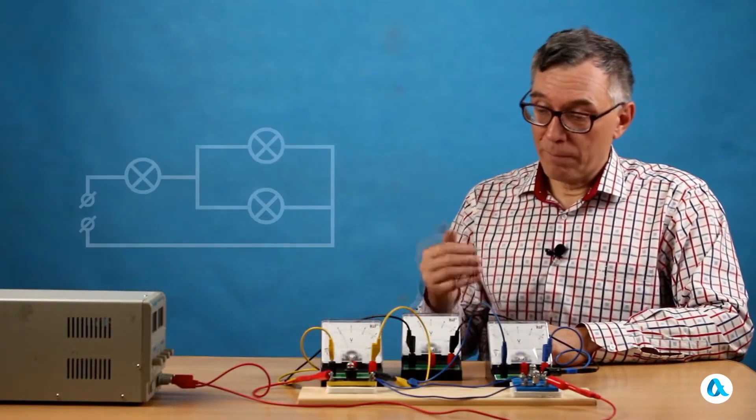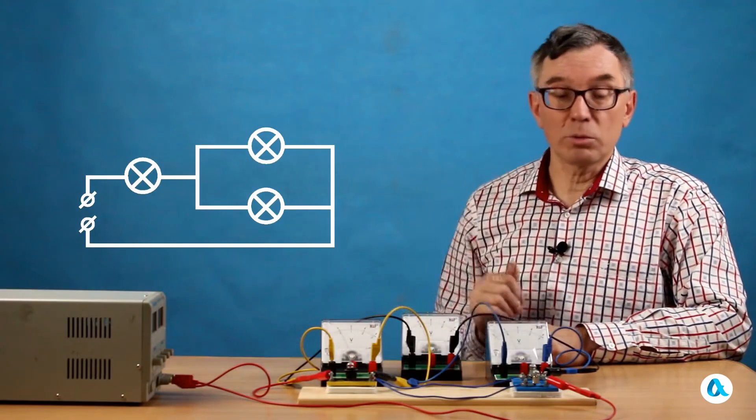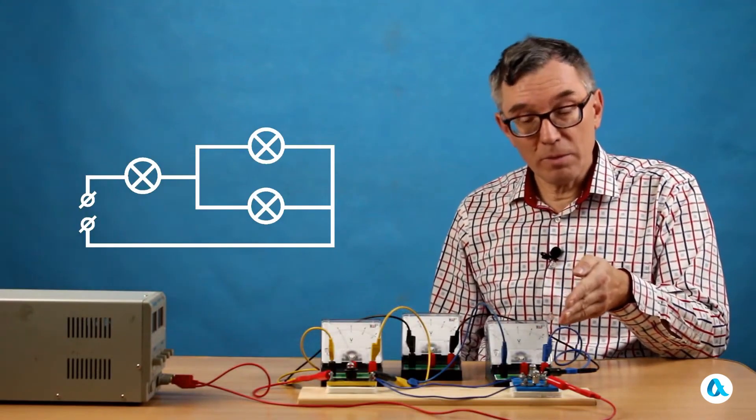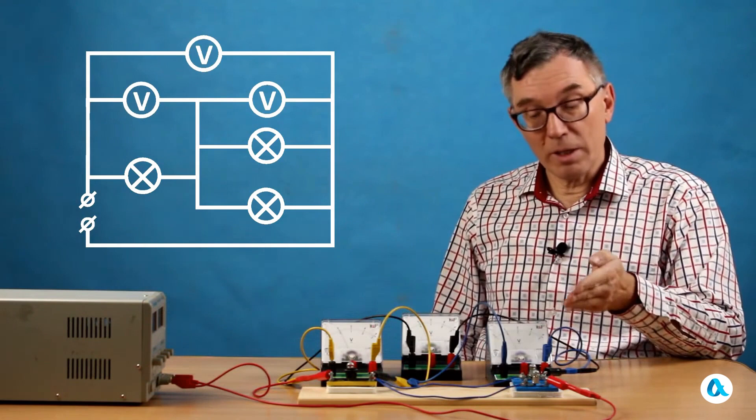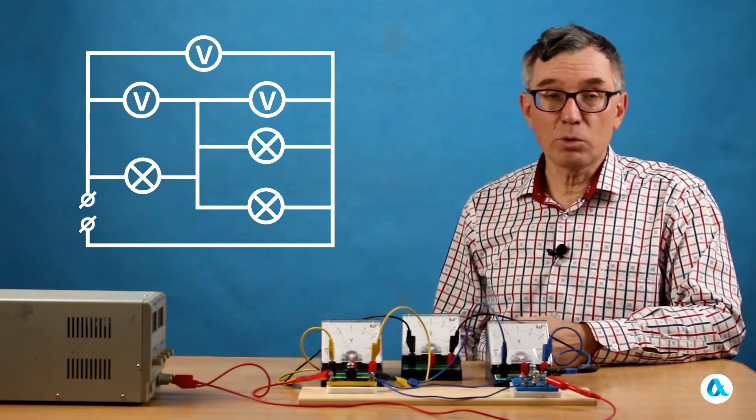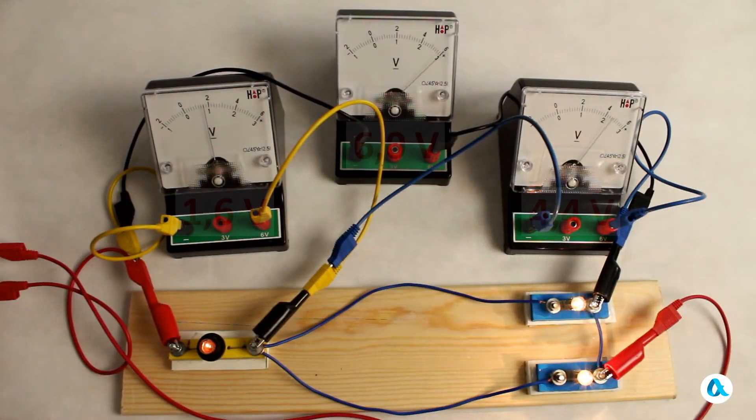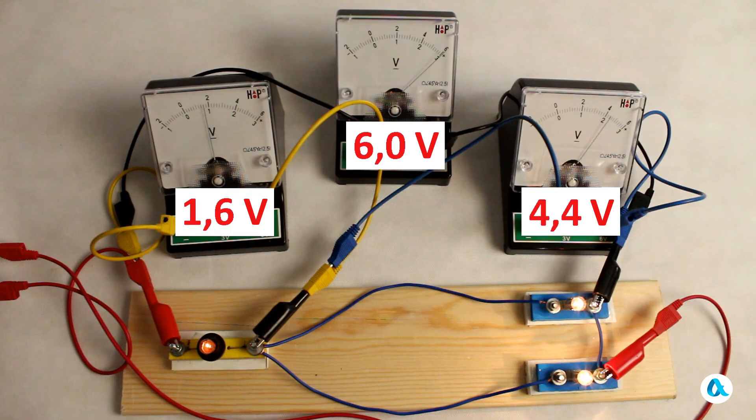Now, I've put together a more complex circuit. Here, a lamp is connected, and in series with it is a block of 2 lamps connected in parallel. The voltage across the first lamp is measured by this voltmeter. The voltage across these two lamps is measured by this voltmeter. And the third voltmeter measures the voltage across this entire section of the circuit. I turn on the power source, and we see that the voltage drop across the first lamp is just under 2 volts, across the two parallel connected lamps it's just over 4 volts, and the total voltage drop across this section of the circuit is exactly 6 volts. That is, the total is exactly the sum of the voltage drops across each individual section.